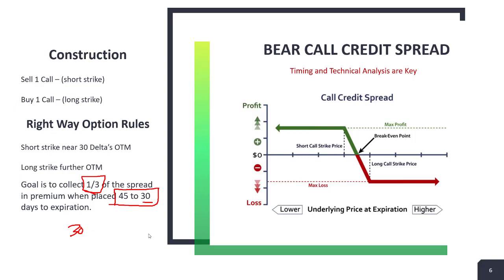Can you take at-the-money or in-the-money credit spreads? Yes, but I've never seen anyone have a good win ratio with them. An at-the-money credit spread is a 50/50 trade at best — I want better odds than that. An in-the-money credit spread runs the risk of assignment. The advantage is you collect more credit, but you're going to have a very low win-loss ratio on those.